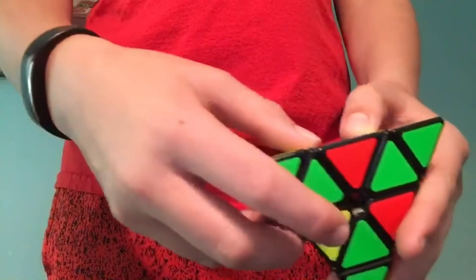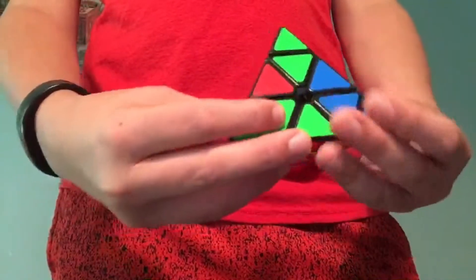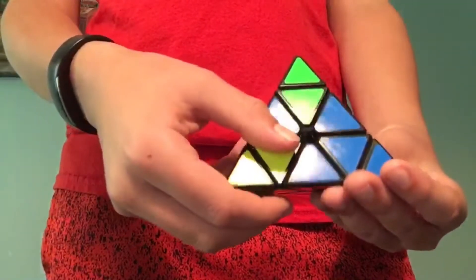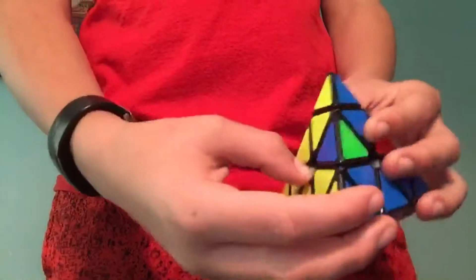To get this yellow right here, you're going to need to go down that way, up, that way. And that should give you a yellow.